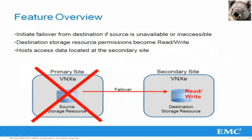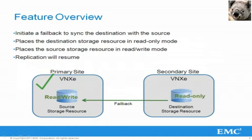If the primary site becomes unavailable or inaccessible, usually as a result of a disaster or unexpected outage, an administrator can execute a failover from the destination system. The destination storage access permissions change from read-only to read-write, and hosts can then access this active storage resource. Once the primary site is up again, a failback can be performed to return everything back to its original state.